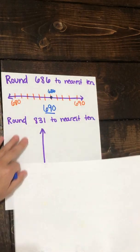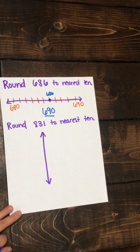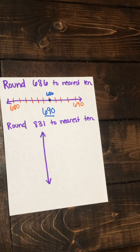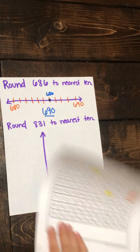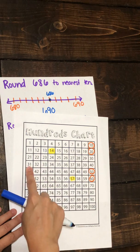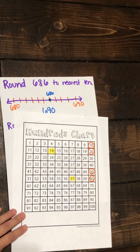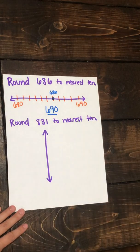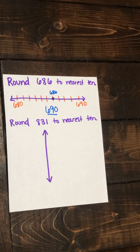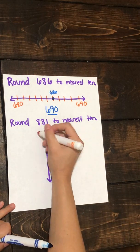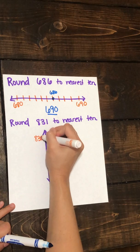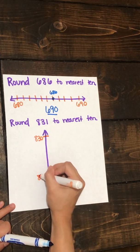Let's look at our last example. This is also a number line — it's just turned vertically. We can use it the same way. This time we're going to be rounding 831 to the nearest ten. Looking back at our hundreds chart, the number 31 is in between the tens of 30 and 40, so I'm going to put 830 and 840 on my number line.